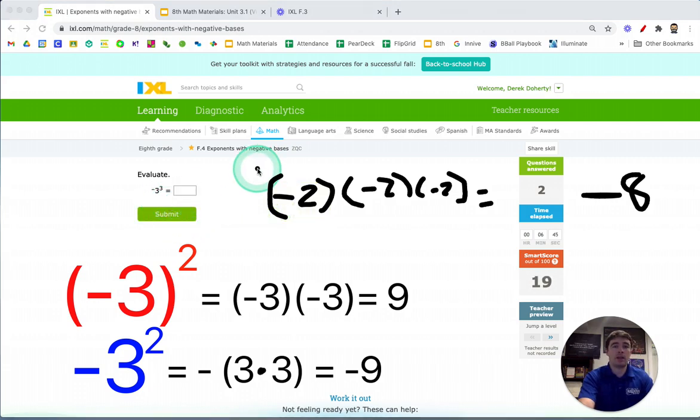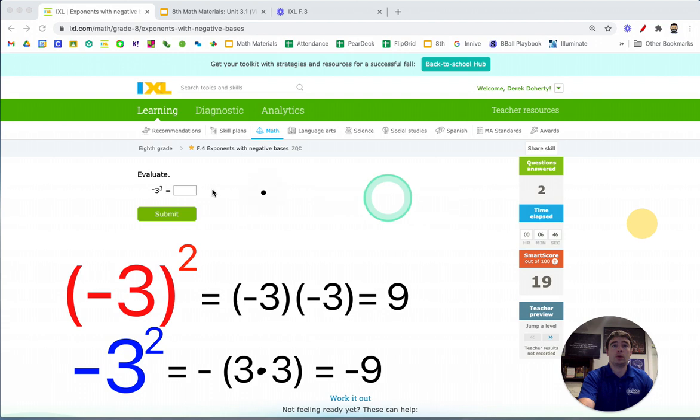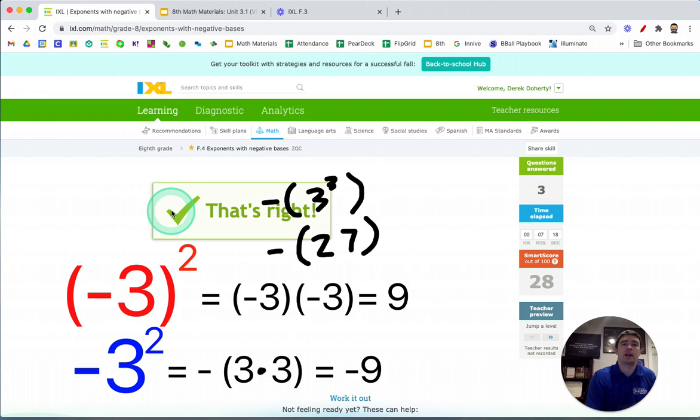Now the next problem that we have here says to us the opposite of 3 cubed. So we're not going to be doing a negative 3 multiplied together three times. We're doing the opposite of 3 cubed. That's literally what this says. Do 3 cubed and then take the opposite. And I know that 3 cubed, 3 times 3 times 3 makes 27. So this is saying just take the opposite of 27. So I'm going to put that 27 there, but I've got to remember, this is the opposite of 3 cubed, or negative 27.